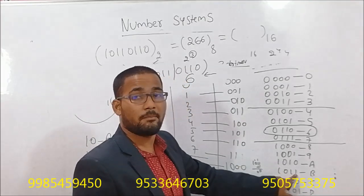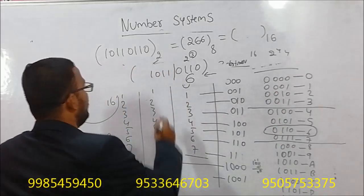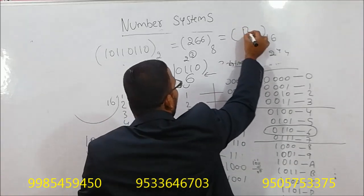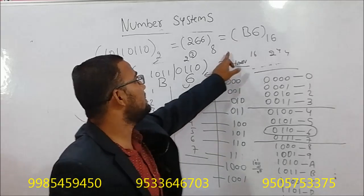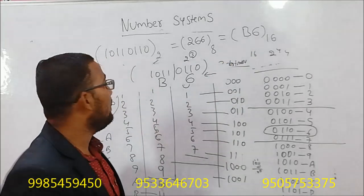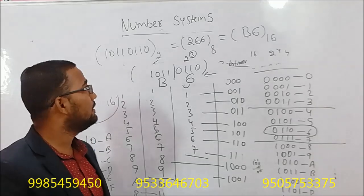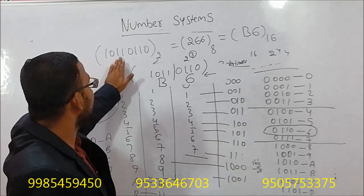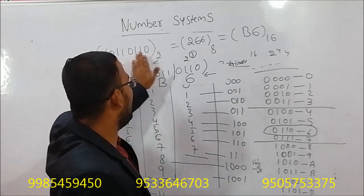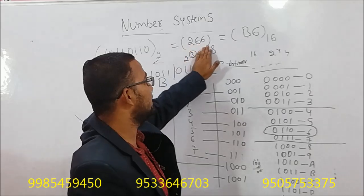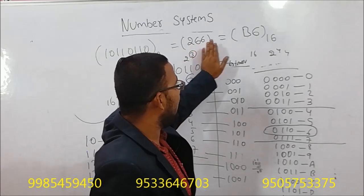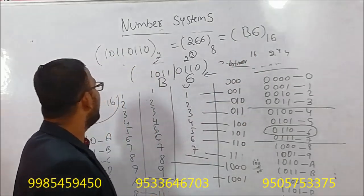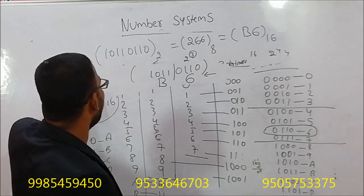We have hexadecimal B. So here 1011 gives B as one value. So B6 is equal to this binary number. The equivalent hexadecimal number is B6. So 1011 0110 is equal to B6, which is the equivalent hexadecimal number.